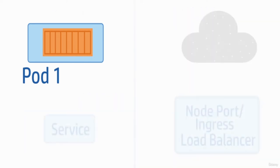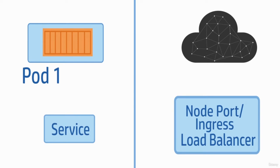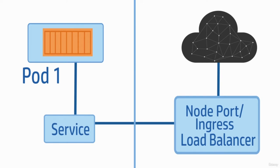Now let us discuss another important keyword related to Kubernetes: services. Services are used to allow network access to a set of pods. If you have a client request, there are three options: NodePort, Ingress, or LoadBalancer to access your pod from the outside world. There is also ClusterIP, which is used for internal communication. If you want to access your pod from the outside world, you need to use NodePort, Ingress, or LoadBalancer.